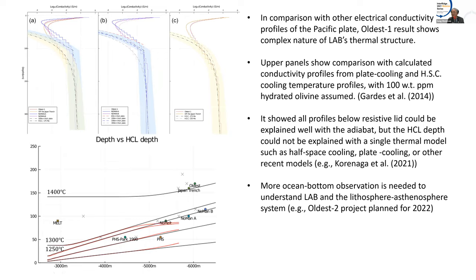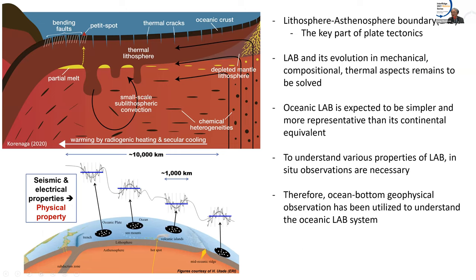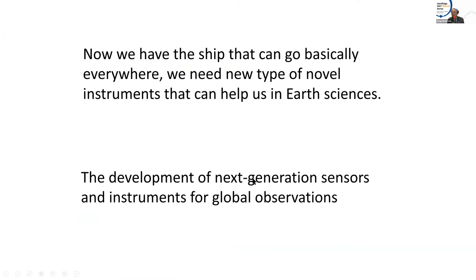My student looked at the data collected over a year, and found out that none of the data fit anything. It's like a person touching the elephant — when you have just one observation you can make a claim, but as you have more observations, the Earth is definitely more complicated than a two-layer or three-layer model. It has convection, melt, hydration, cracks, and all these things. When everything did not go according to our prediction, that motivates us to do more — we have to develop the next generation of instruments.